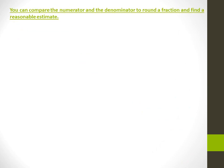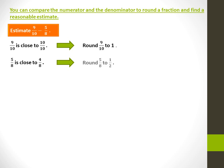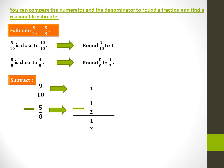You can compare the numerator and the denominator to round a fraction and find a reasonable estimate. Estimate 9 over 10 minus 5 over 8. 9 over 10 is close to 10 over 10, which is equal to 1, so 9 over 10 is rounded to 1. 5 over 8 is close to 4 over 8, which is equal to half, so round 5 over 8 to half. Now subtract: 1 minus half is equal to half.